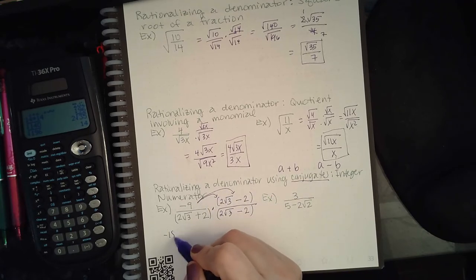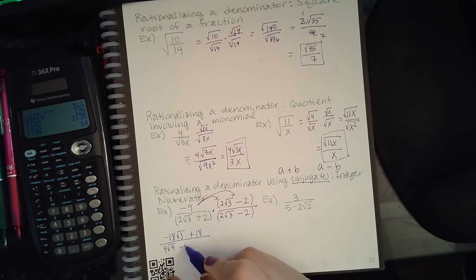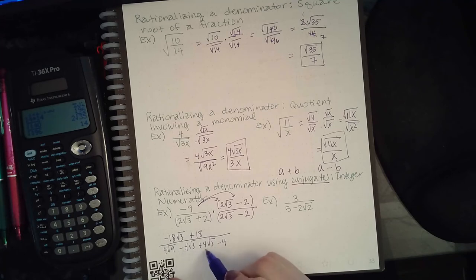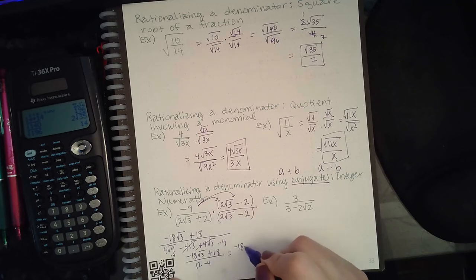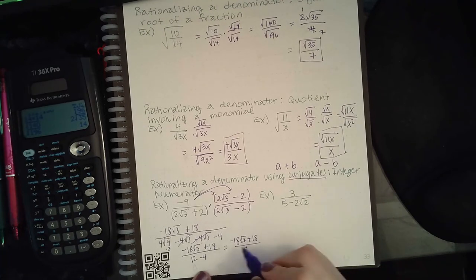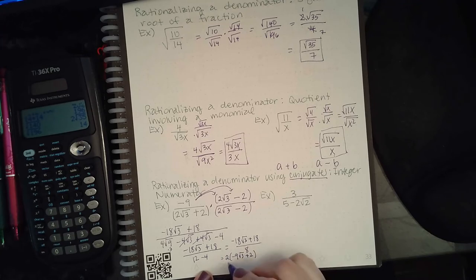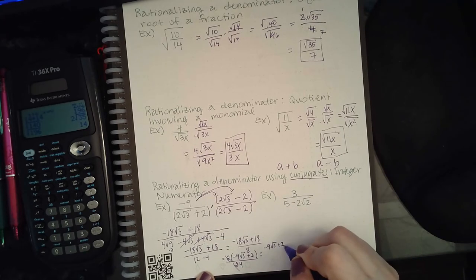Then do the problem normally. I'd distribute and get negative 18 square root of 3, then positive 18, then 4 square root of 9, then negative 4 square root of 3 and positive 4 square root of 3 — those cancel. Then I have negative 4. So I get negative 18 square root of 3 plus 18, and 9 is 3 so 4 times 3 is 12 minus 4, leaving me with negative 18 square root of 3 plus 18 over 8. Factoring 2 out of the top gives negative 9 square root of 3 plus 9, and factoring 2 from the bottom gives 4, so the 2s cancel.